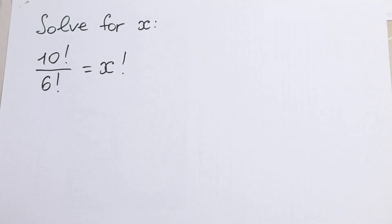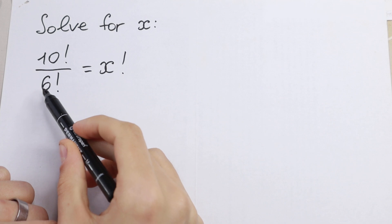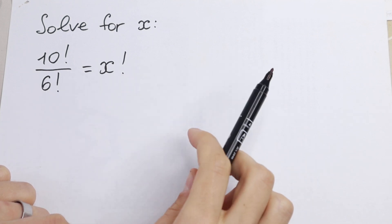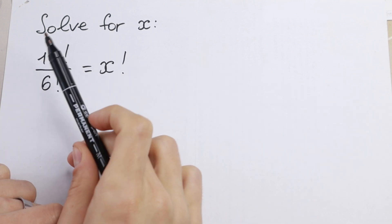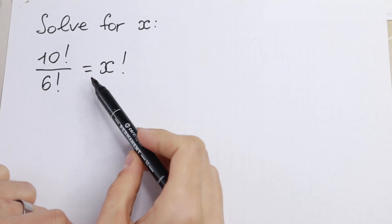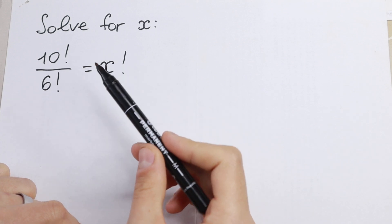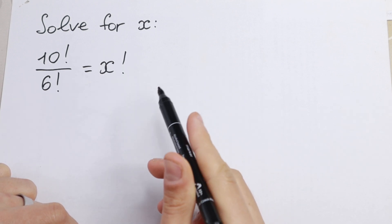Hello everyone! Welcome back to my channel, welcome back to MathMod. In this video we are going to solve this interesting equation with factorials. We have 10 factorial over 6 factorial equal to x factorial. How can you solve it?